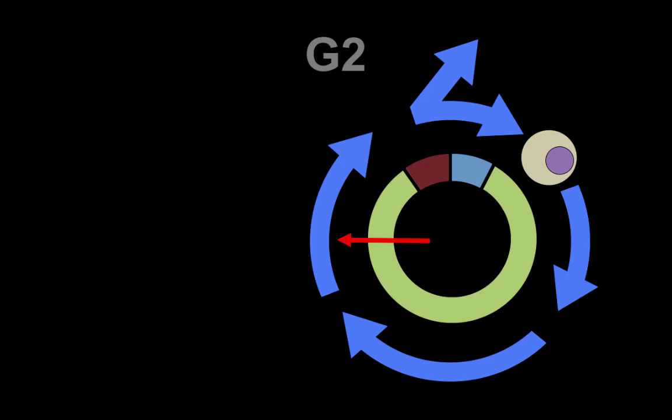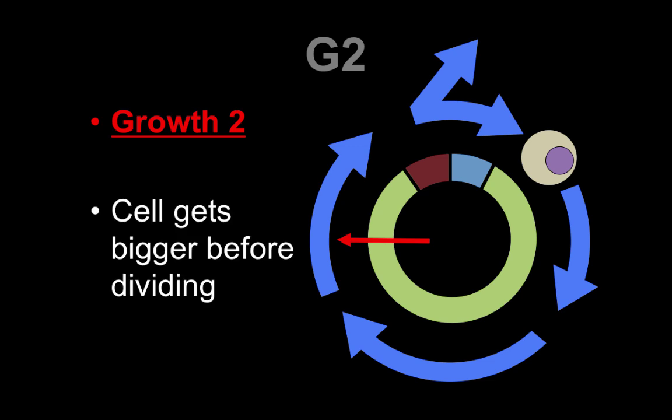Next we're going to go into G2. And this is kind of like the prep. So it's like the final walkthroughs you do before the game. It's just growth two and the cell is going to get a little bit bigger before dividing. And it's also going to replicate some of those organelles and other things that need to be done just before dividing.